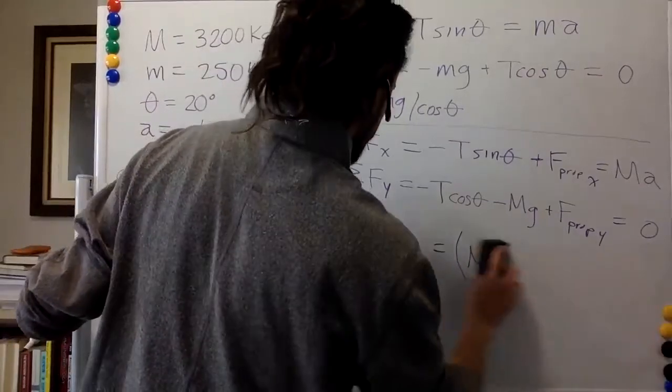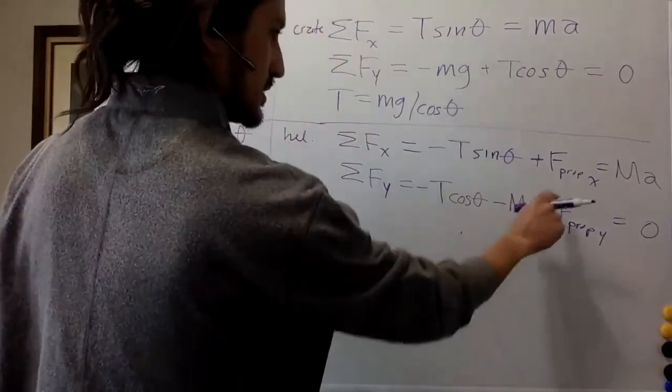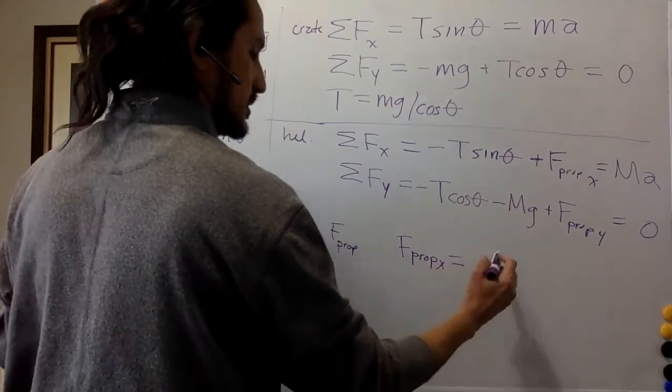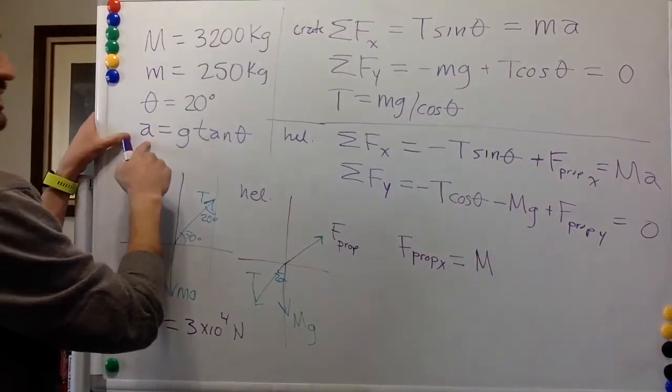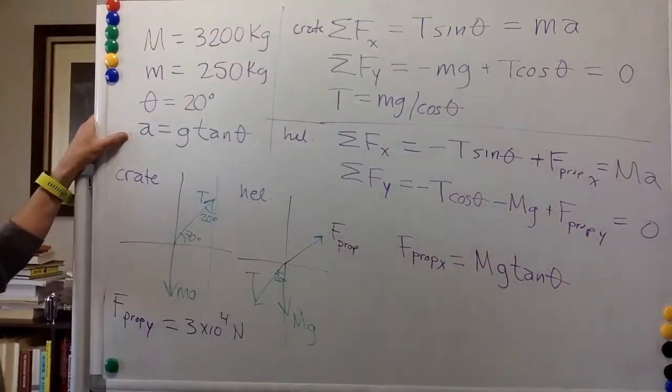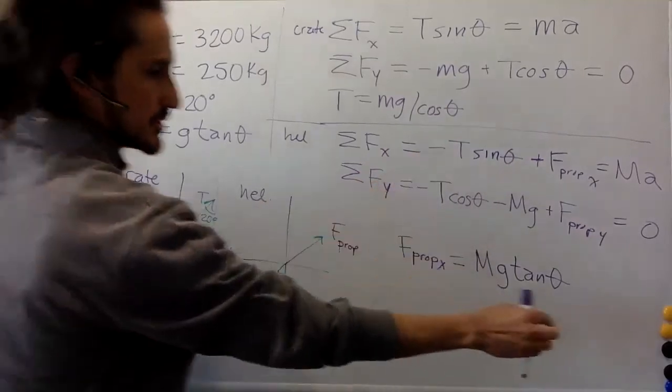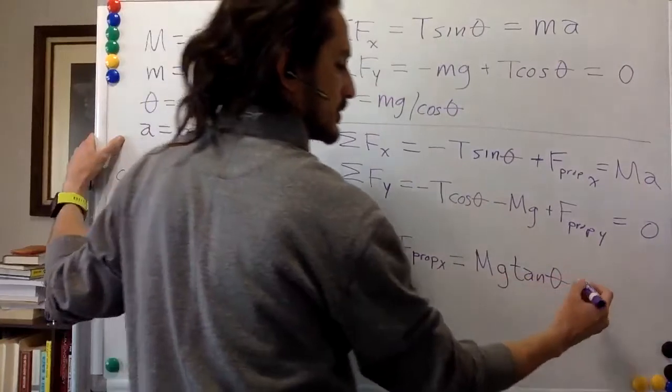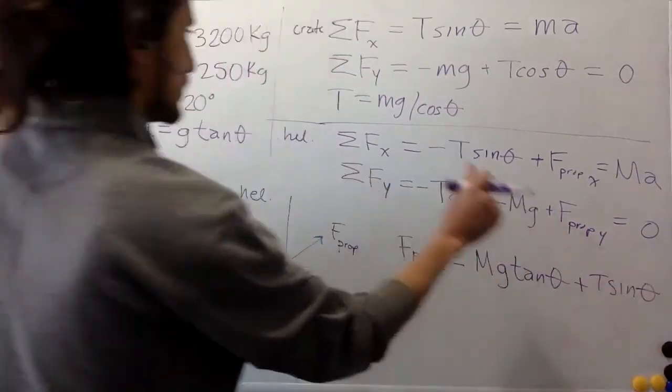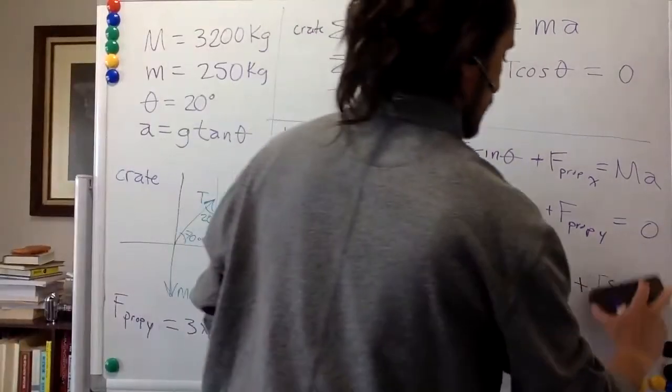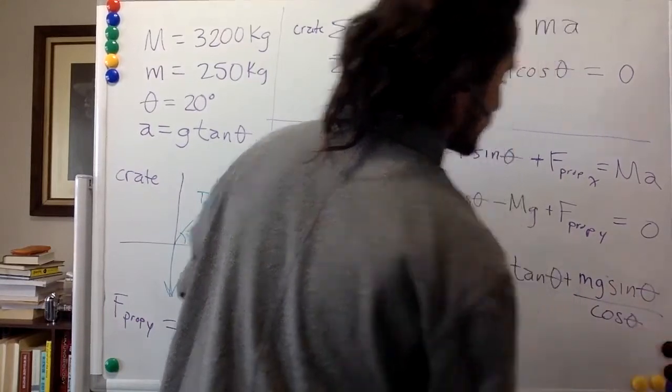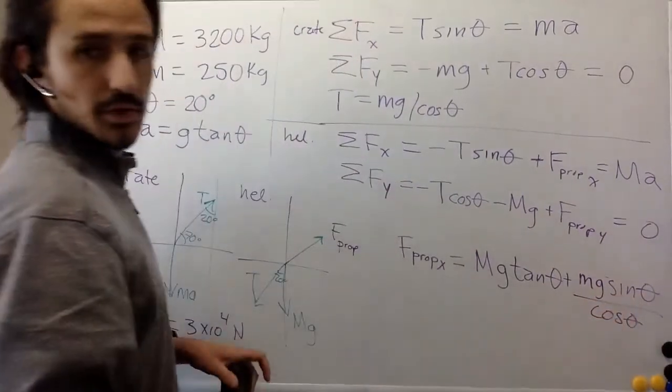The x component of the propulsion is mass times acceleration. We have it over here. So it's Mg tangent theta, and then we have negative tension, so we're going to put it over here positive. Plus tension sine theta. And the tension over here is mg divided by cosine theta. mg divided by cosine theta, sine divided by cosine - that's tangent. Now we can factorize, we have tangent theta. So this is big M plus small m, so the mass of the helicopter plus the mass of the crate, g tangent theta.